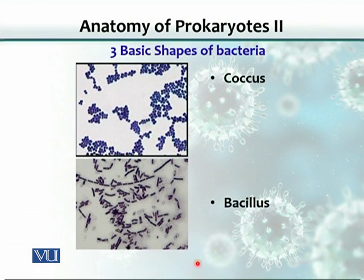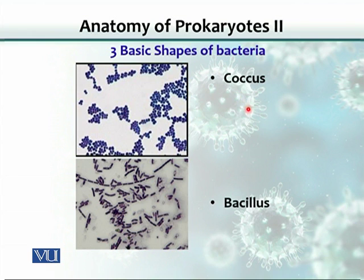If we try to classify prokaryotes, especially bacteria, they come in three shapes. Morphologically, shape-wise, some cells look round or spherical. Any cell that is spherical is called a coccus. The plural is cocci.